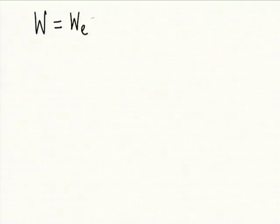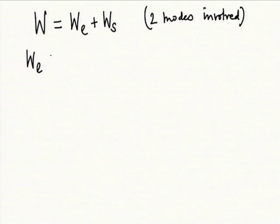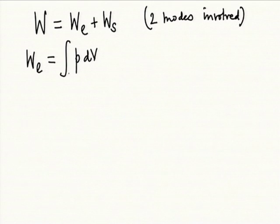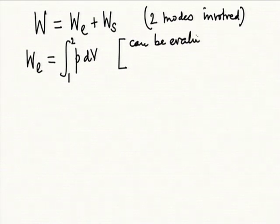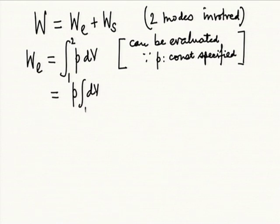So after this, we realize that W is the sum over the modes. There are two modes of work: W_e plus W_s — two modes involved. Then we say that W_e by definition is the integral of P dV from state 1 to 2, and we say this can be evaluated since P is constant and specified. Since P is specified directly or indirectly as any function of V, you can evaluate it. This simplest case gives P times (V2 minus V1).